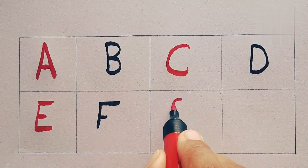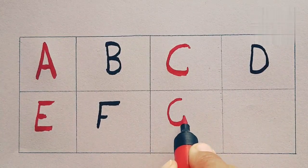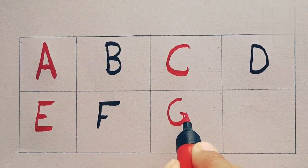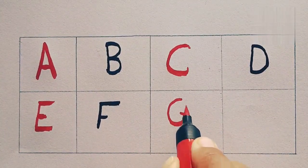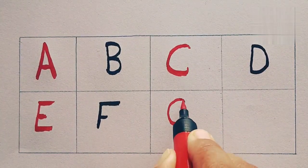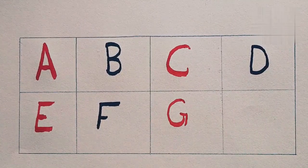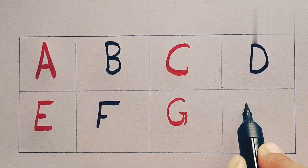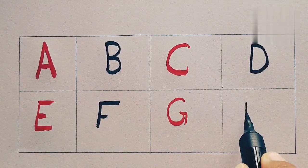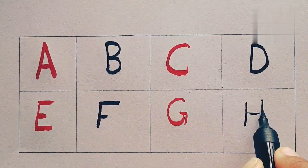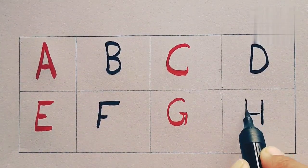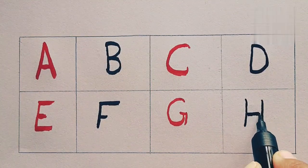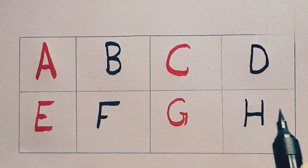Capital G. G for grabs. Grabs means angoor. Capital H. H for hat. Hat means to be.